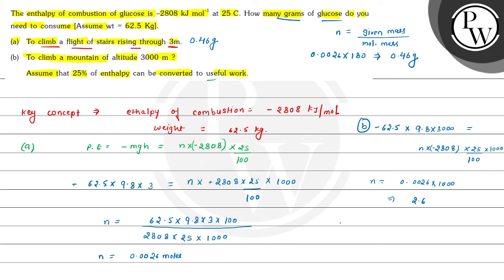Mass equals number of moles 2.6 multiplied by 180. This comes out to be 0.46 multiplied by 10 to the power 3 grams, so we can write it as 0.46 kilograms. The answer for Part B is 0.46 kilograms. These are the answers of Part A and Part B. Hope you understood it well. All the best and thank you.